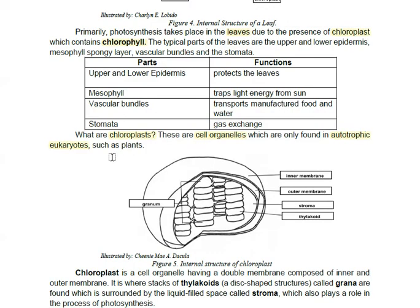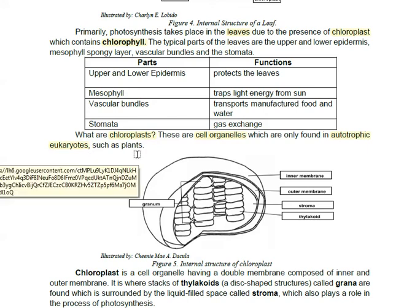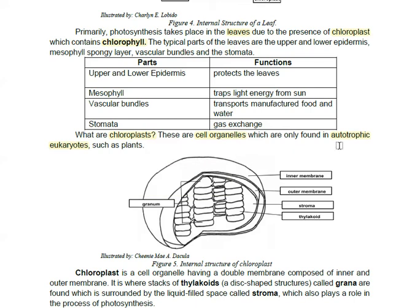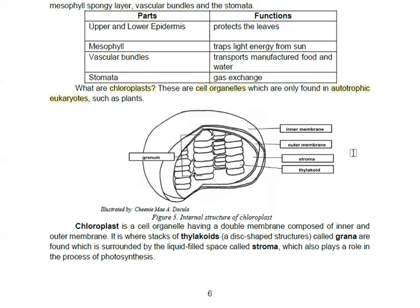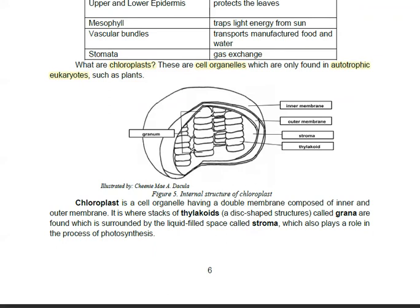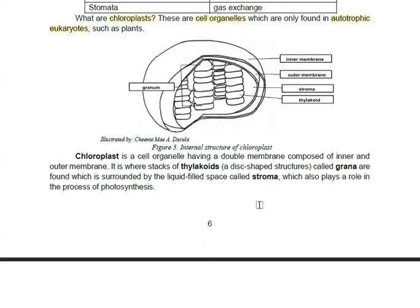So what are chloroplasts? These are cell organelles which are only found in autotrophic eukaryotes such as plants. Humans don't have chloroplasts. We don't have chloroplasts. And so here, inside the chloroplasts, you will find there are stacks of thylakoids and grana, and they are surrounded by a liquid-filled space called stroma.